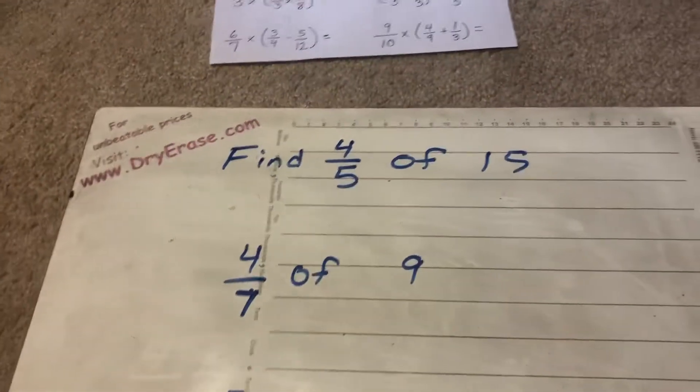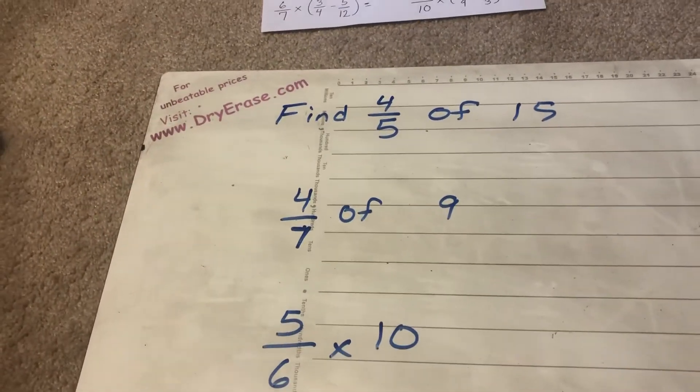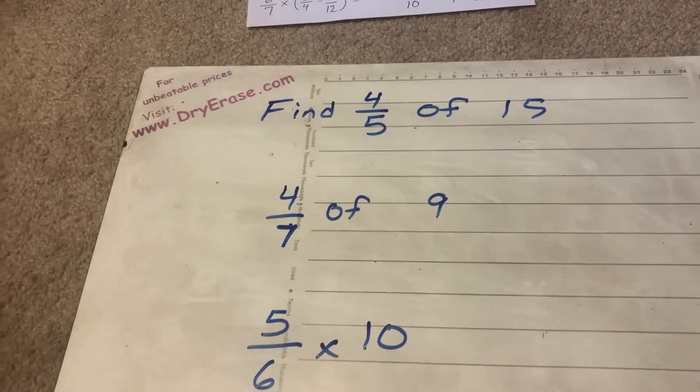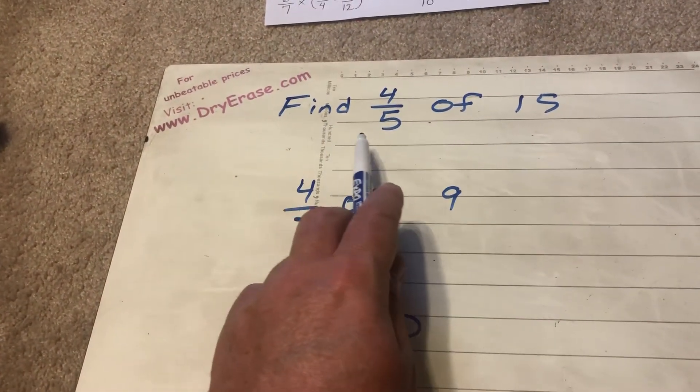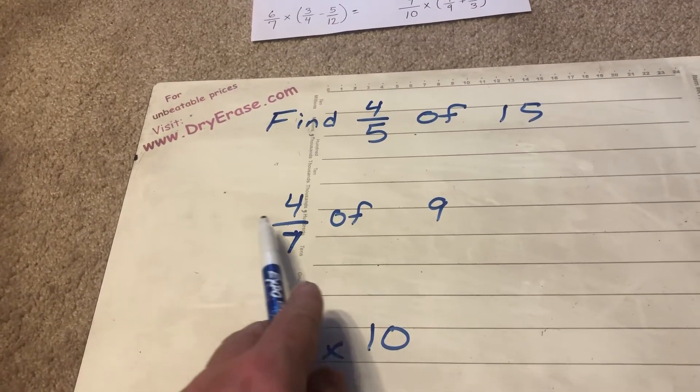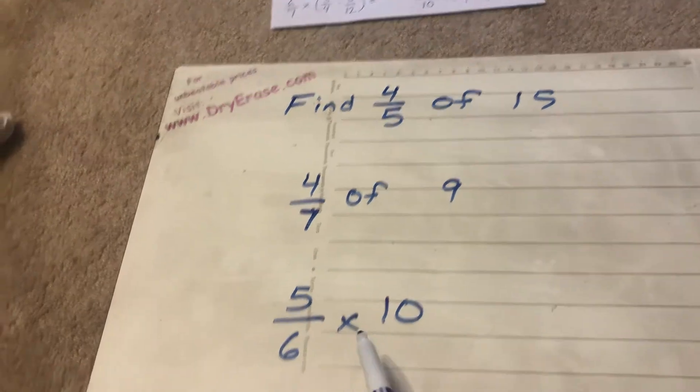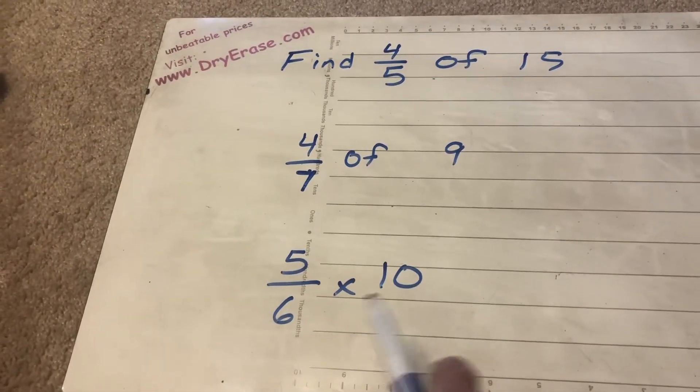So in 9.2 you're going to get three types of problems, okay? You're gonna get some that look like this with some words that say find four-fifths of 15. Some just take out the word find and it says like four-sevenths of nine. Some write it as a multiplication problem and then in 9.3 they're all going to be written here like these multiplication problems.